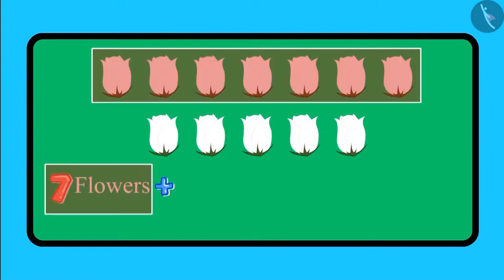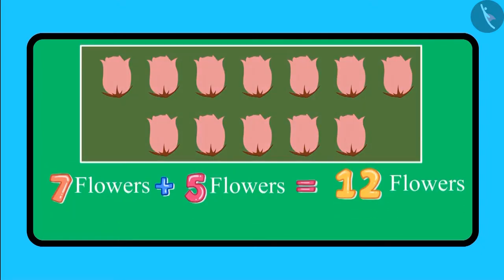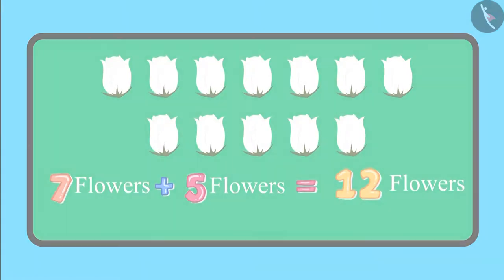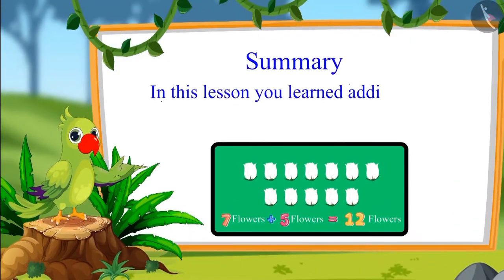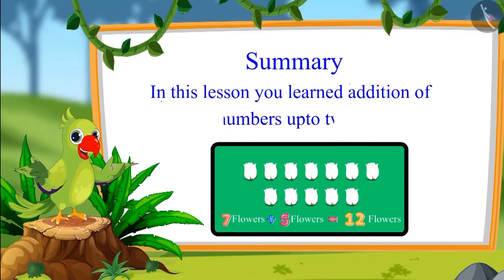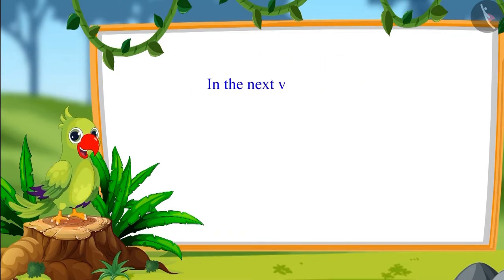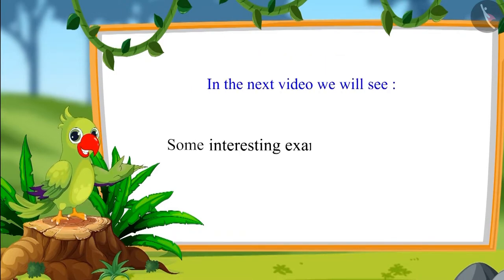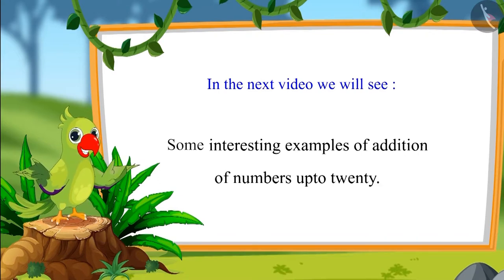That makes a total of 12 flowers. So children, 7 flowers added to 5 flowers make a total of 12 flowers. That is all for today. In this lesson, you learned to add numbers up to 20. In the next video, we will see some more interesting examples of addition of numbers up to 20.